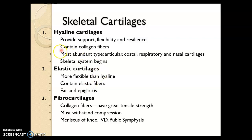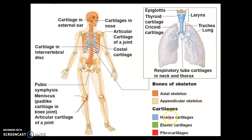Now it's important to know where the three types of cartilage are located. Starting with hyaline cartilage — blue is used to notate where it's located. The locations for hyaline cartilage include your rib cartilage, which is called costal cartilage, at the ends of long bones, which is called articular cartilage.